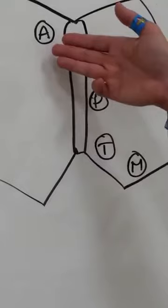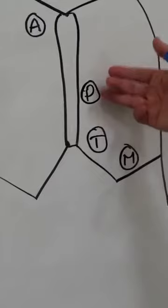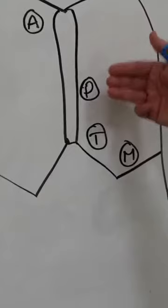Once we have auscultated for murmurs, for thrills, for gallops, we then move to the pulmonic listening post which is at about the third intercostal space to the fourth intercostal space on the left-hand side of the sternum.